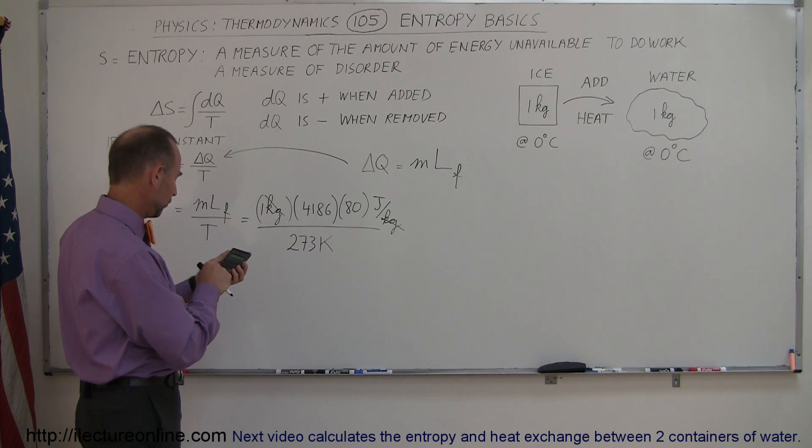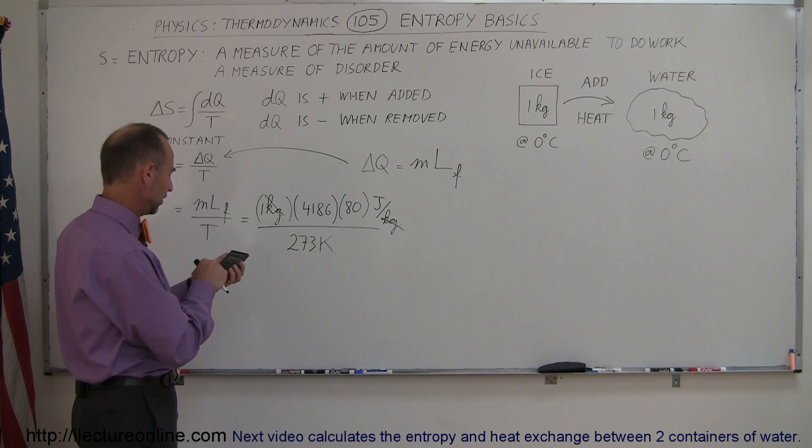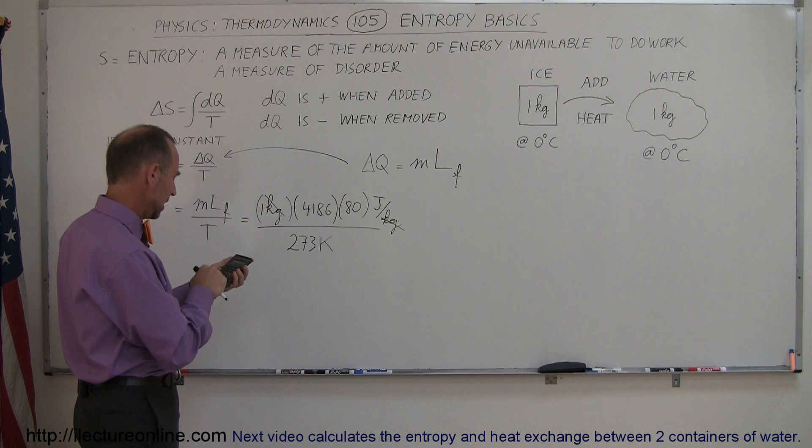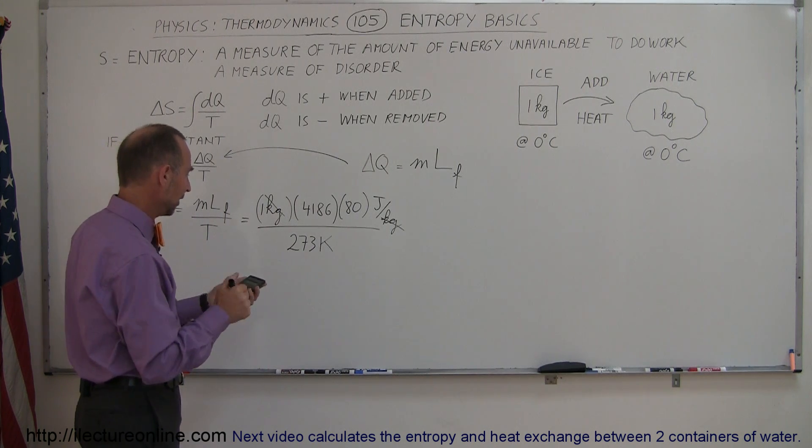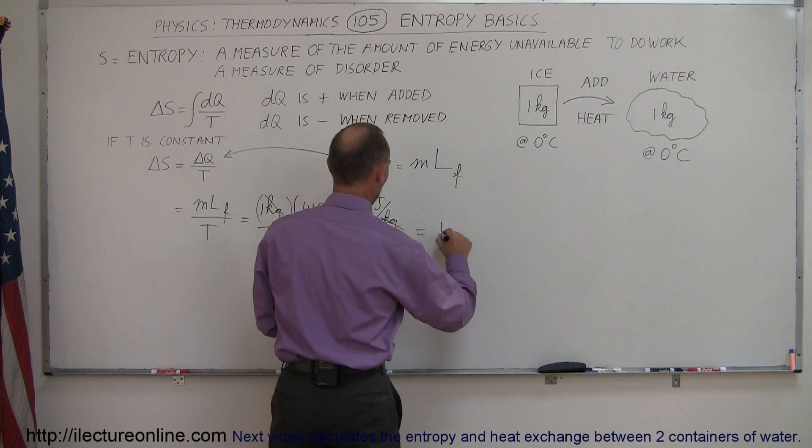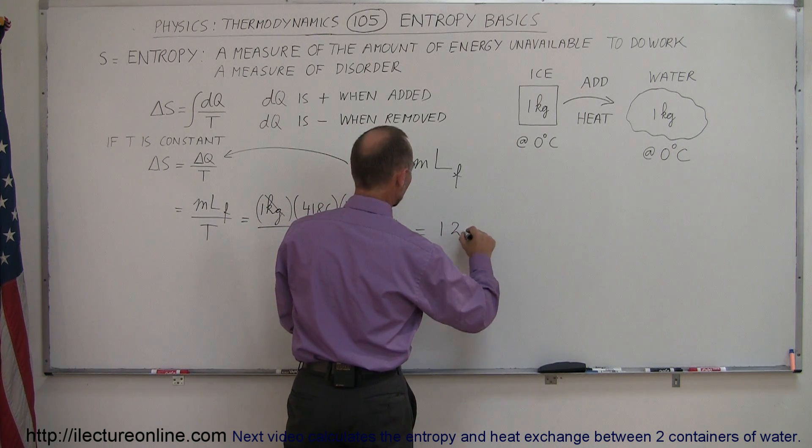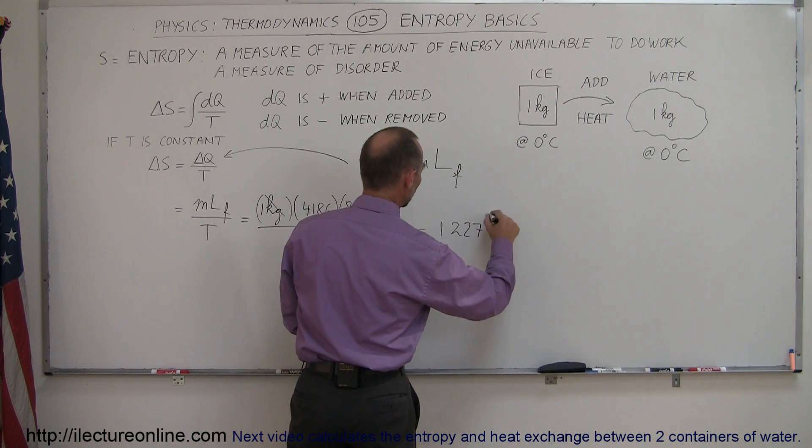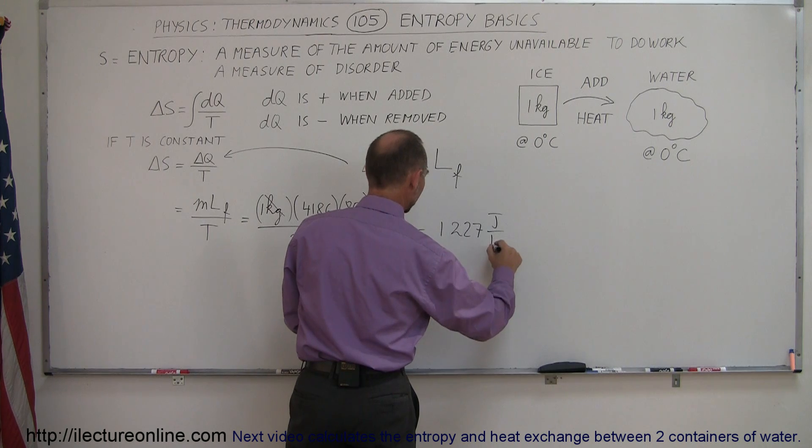Alright, now let's calculate what that is. We have 4186 times 80 and we divide that by 273 and we're left with 1227 joules per kelvin.